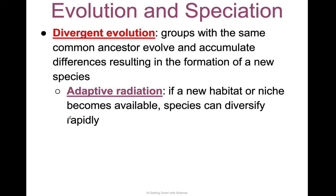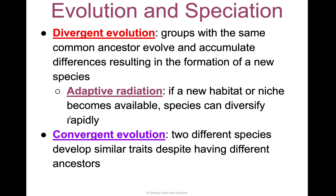Adaptive radiation is when a new habitat or niche becomes available and species can diversify — similar to sympatric speciation. For example, a new island being formed, or a forest being burnt down creates new niches that are available and species diversify to fill them. Convergent evolution is when two different species develop similar traits despite having different ancestors — analogous traits are a result of convergent evolution.